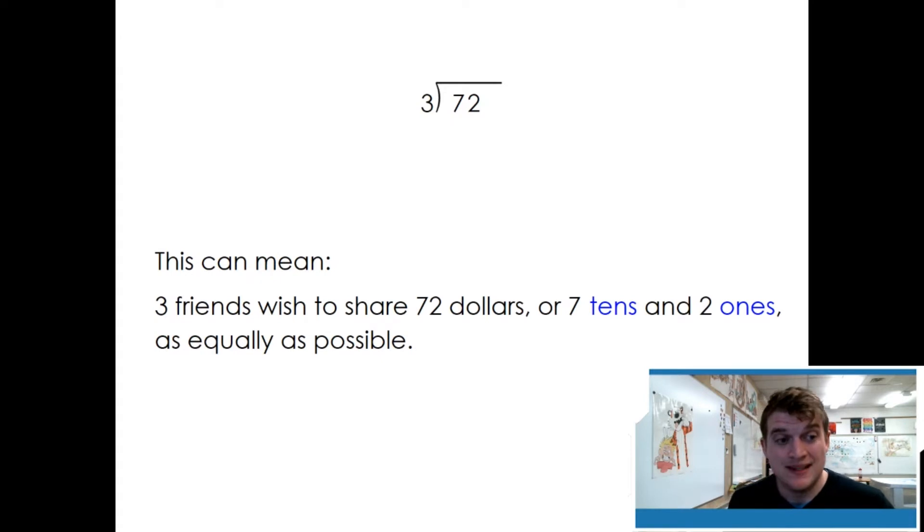This symbol can mean three friends wish to share seventy-two dollars or seven tens and two ones as equally as possible. We've taken that big number of seventy-two and broken it into tens and ones.